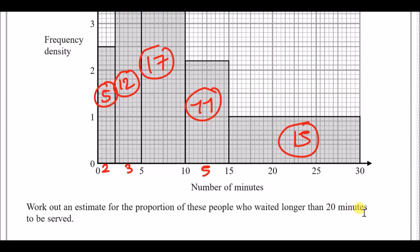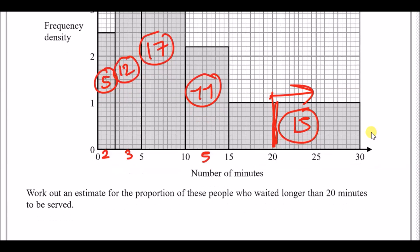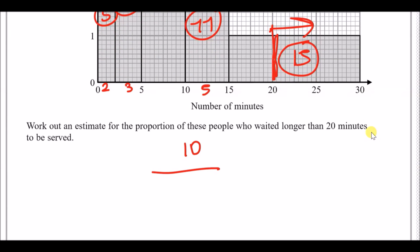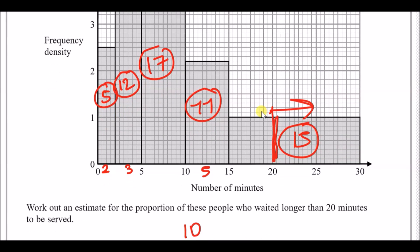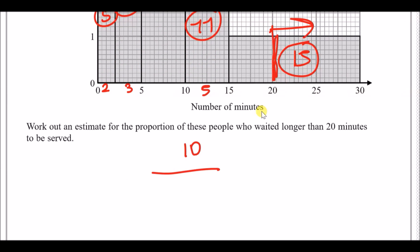Now we need the proportion who waited longer than 20 minutes. That region gives us 10 people. The total is 5 plus 12 plus 17 plus 11 plus 15, which equals 60. So 10 out of 60 — in other words, 1 out of 6.